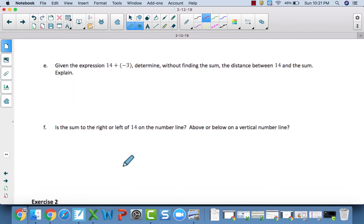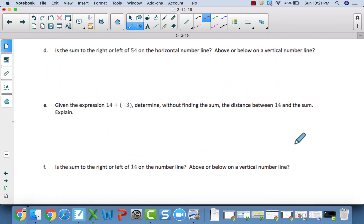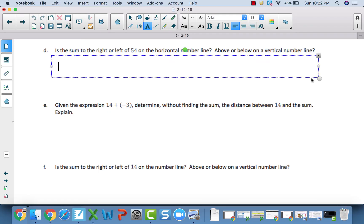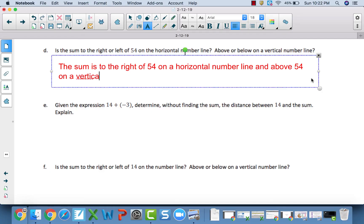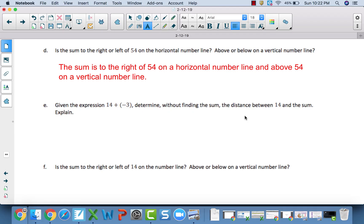Now, go through and answer D through F. When you are done, come and check the video, and we will go over these three. All right, for D, it's asking, is the sum to the right or left of 54 and above or below 54? The sum would be to the right of 54 on a horizontal number line and above 54 on a vertical number line, because we are adding a positive.